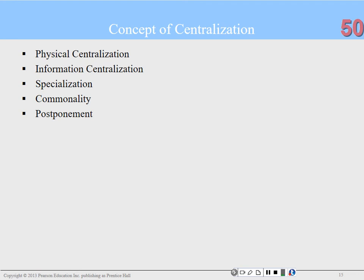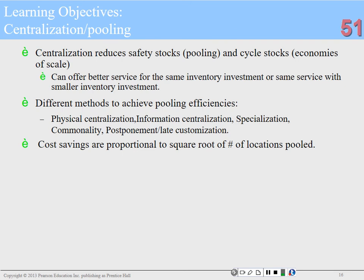Centralization reduces safety stocks through pooling and cycle stocks through economies of scale — it can offer better service for the same inventory investment. You can achieve this through physical centralization, information centralization, specialization, commonality, and postponement. At Pella, the main safety stocks were held in Pella, Iowa, with daily deliveries to Story City and Shenandoah, while plants held much smaller safety stocks. Cost savings are proportional to the square root of the number of locations pooled.